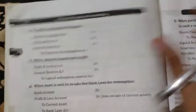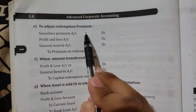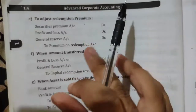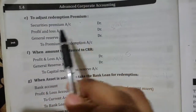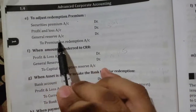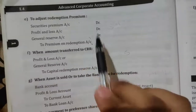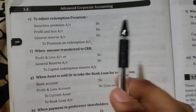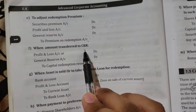Now let's move to the fifth entry — to adjust the redemption premium. This entry comes in every sum. The entry is: Securities Premium Account Dr., Profit and Loss Account Dr., General Reserve Account Dr., to Premium on Redemption Account. In the questions, they will give you specific figures, so it is very easy.